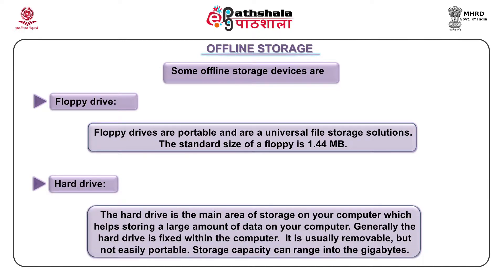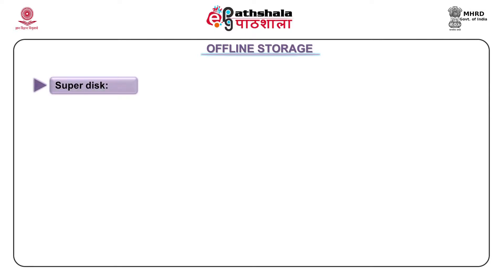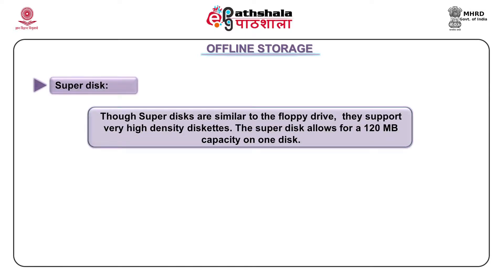The hard drive is the main area of storage on your computer, helping store a large amount of data. Generally, the hard drive is fixed within the computer — removable but not easily portable — and storage capacity can range into the gigabytes. Next, we have the super disk. Though super disks are similar to the floppy drive, they support very high density disks. The super disk allows for a 120 MB capacity on one disk, which is magnanimously huge.